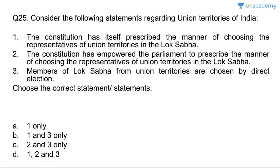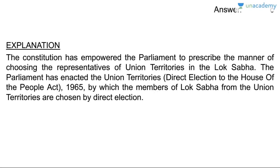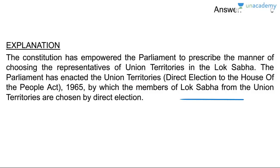Question on Union Territories: the Constitution has itself prescribed the manner of choosing UT representatives in the Lok Sabha — wrong. The Constitution has empowered Parliament to prescribe the manner — correct. Members of Lok Sabha from UTs are chosen by direct election — correct. Answer is C, two and three. Parliament enacted the UTs Direct Election to the House of People Act, by which Lok Sabha members from UTs are chosen by direct election.